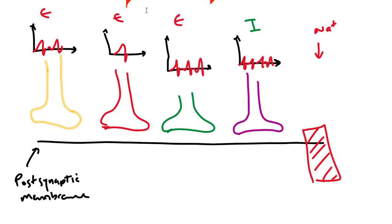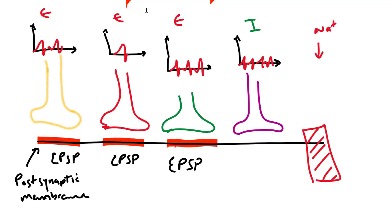An excitatory connection will create what we call an excitatory post-synaptic potential, or EPSP. For this excitatory neuron, the post-synaptic potential will be right here — a PSP. Since this neuron is excitatory, it creates an EPSP, meaning you're moving the potential in the membrane away from resting potential toward a positive number — increasing it. The same applies for the other excitatory neurons. Whereas the inhibitory neuron will create an inhibitory post-synaptic potential, an IPSP.